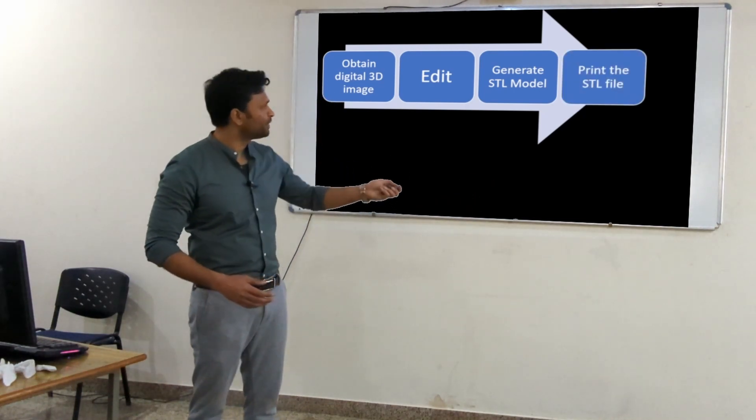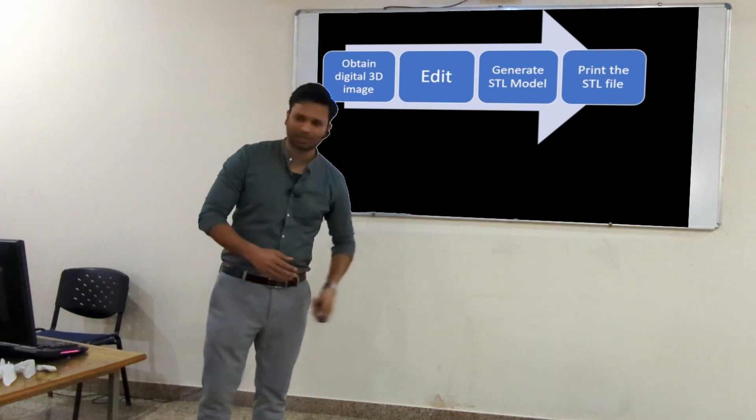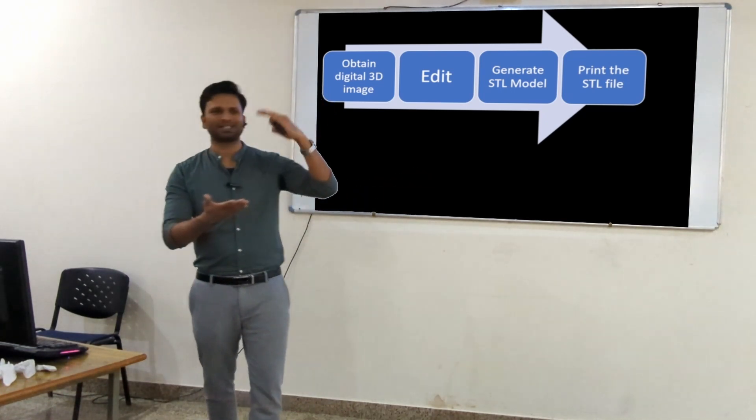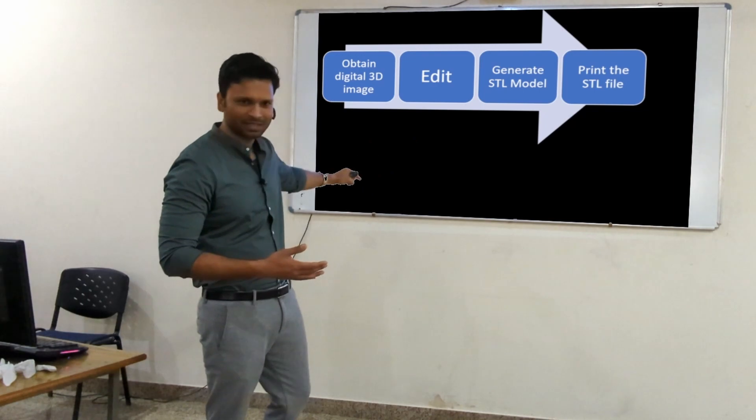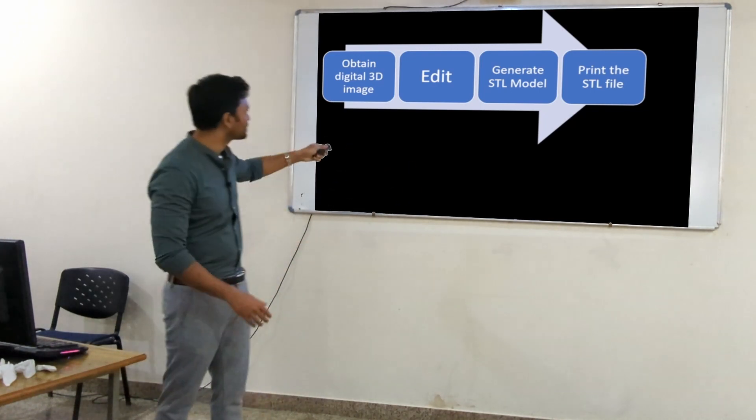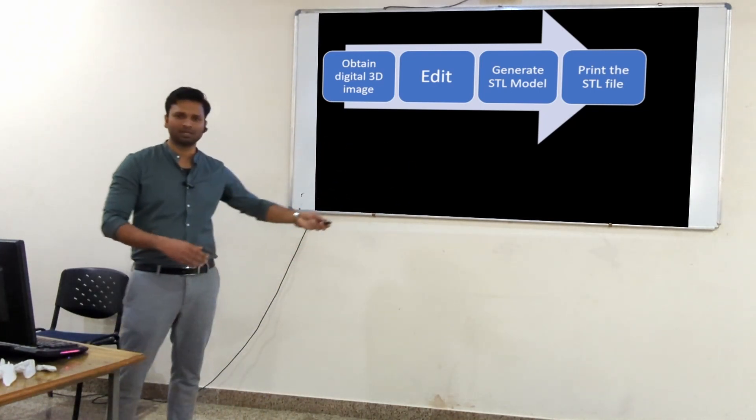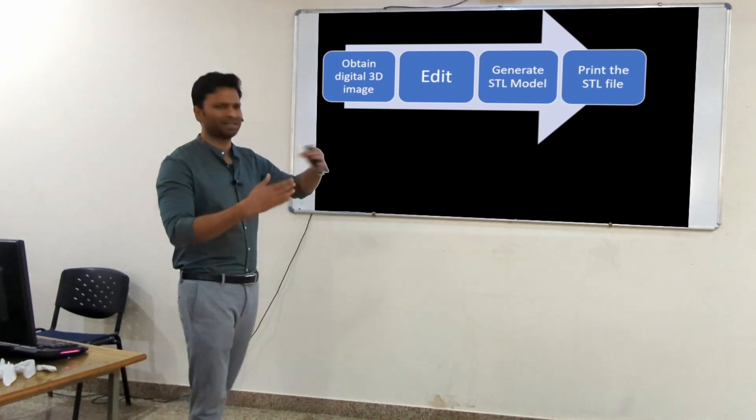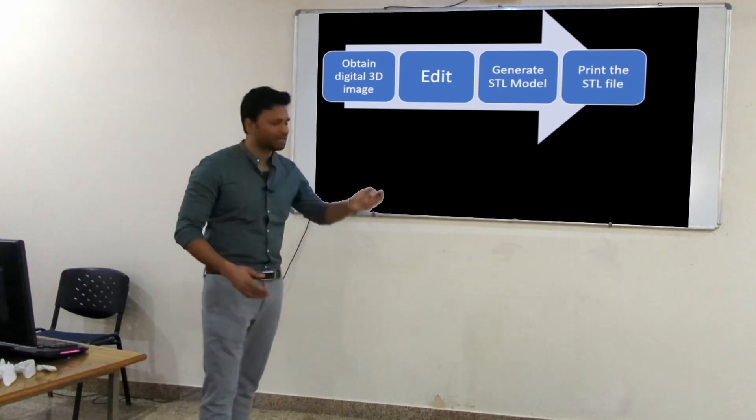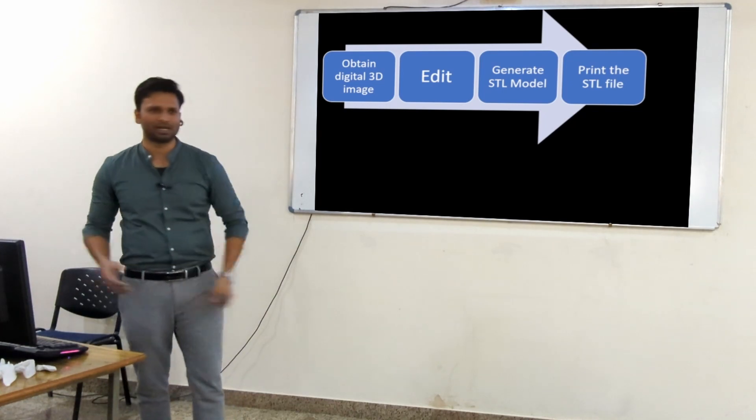We feed the STL model into the printer and it's going to do a process called slicing. I'll show you what slicing is. So there's four steps: we obtain the 3D image, do mock surgery or create a surgical guide, then generate the STL model.